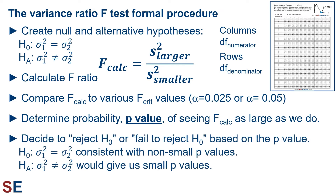We then decide whether to reject the null hypothesis or fail to reject it based on the p-value. The null hypothesis — that the variance of population 1 equals the variance of population 2 — is consistent with most p-values except for very small ones. The alternative hypothesis would give us small p-values. Typically, when our p-value is less than 0.05, we reject the null hypothesis and conclude that the population variances are different. When our p-value is not less than 0.05, we fail to reject the null hypothesis, indicating that we lack the evidence to conclude the population variances are different, so we would generally assume that they are the same. Keep in mind that, as with all statistical tests, we are not proving the null or alternative hypothesis — we are making a decision about which is likely based on the probability of seeing the test statistic we did.